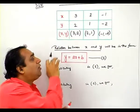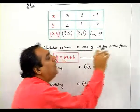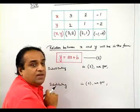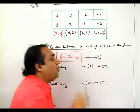Now the next part: relation between x and y. Y will be in the form y is equal to ax plus b. We call this as our equation number 1.